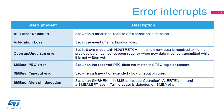Several error flags can be generated. A bus error detection flag is set when a misplaced start or stop condition is detected. The arbitration loss flag is set in the event of an arbitration loss. An overrun or underrun error flag is set in slave mode with clock stretching disabled when an overrun or underrun error is detected. In SMBus mode, a PEC error flag is set when the received PEC does not match the calculated PEC register content. A timeout error flag is set when a timeout or extended clock timeout is detected. An alert pin detection flag is set in the SMBus host configuration when alert is enabled and a falling edge is detected on the SMBA pin.